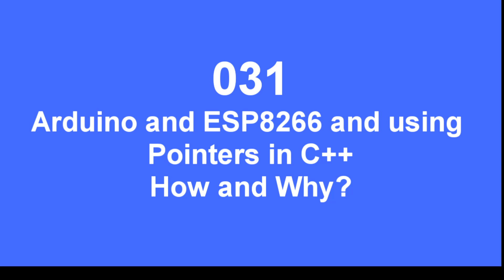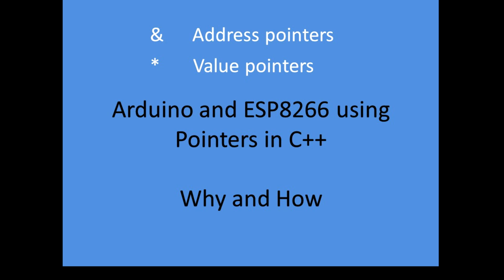In this video I'm going to go through C++ pointers which you'll see in many Arduino or ESP8266 programs. In Arduino or ESP8266 programs you'll see two characters: the ampersand and the asterisk, which are the two characters used for pointer designations. I'll try and explain why and how they're used in programs.